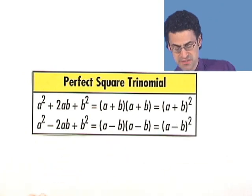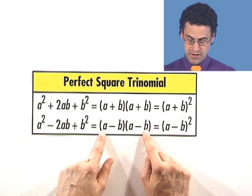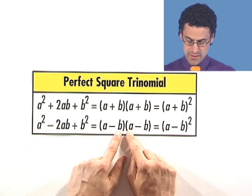And that's right, we get a minus b times a minus b. a times a, a squared. Outer term, negative ab. Inner term, negative ab.